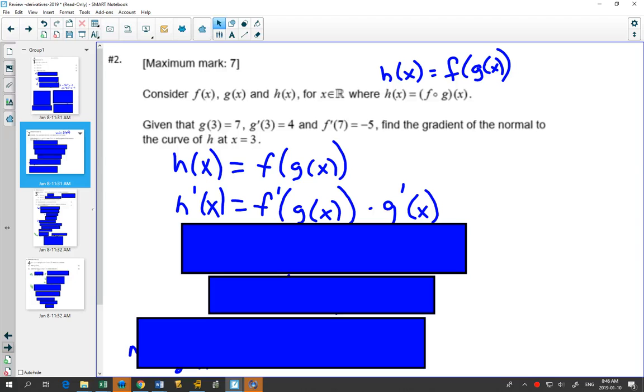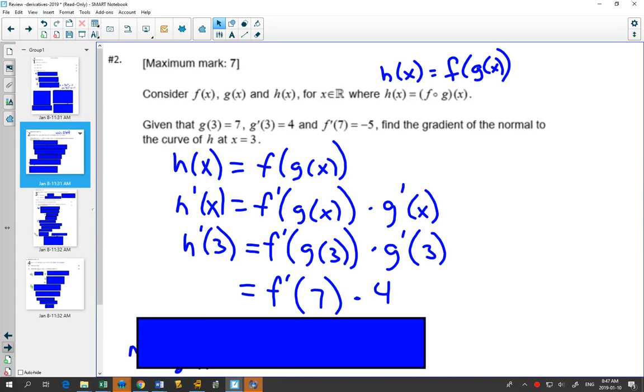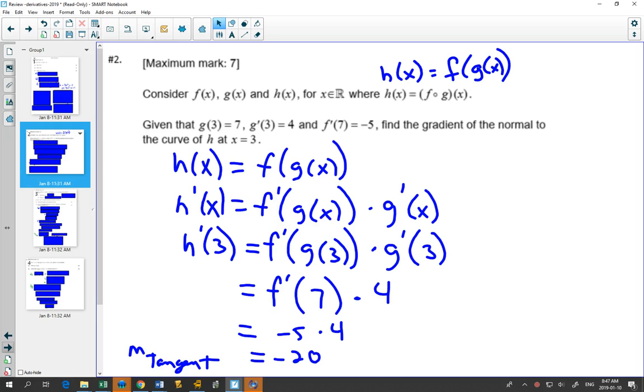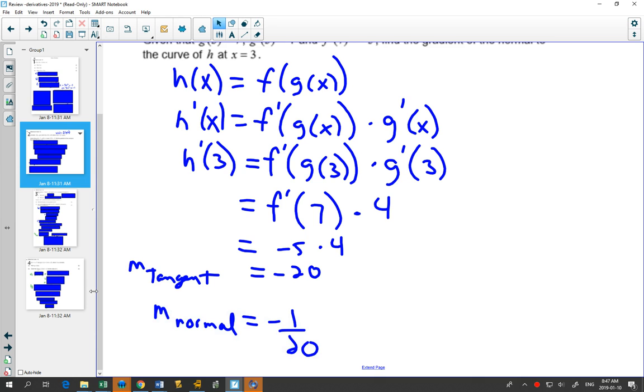And this is where all the other information comes into play. They've told us what g of 3 is. They've told us what f prime of 7 is. They've told us what g prime of 3 is. And surprise, surprise, you plug things in. G of 3 happens to be 7. So now we have f prime of 7. Times g prime of 3 was given to us to be 4. Multiply this out and we find that our slope of our tangent line is negative 20. So the slope of our normal line will be 1 over 20.